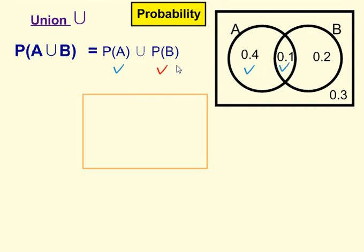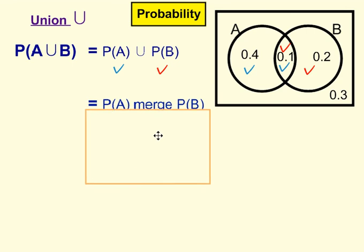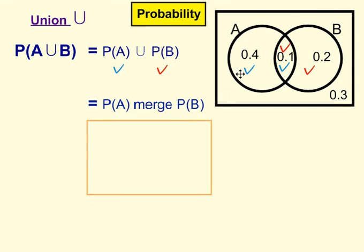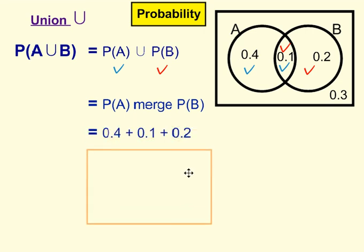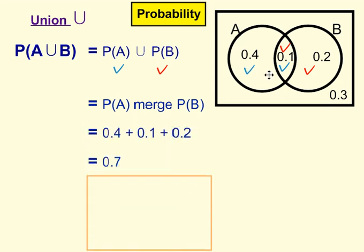Now we look at our second part, B. So B is contained within this circle here, so there's two regions within there — this region here and also the intersection here. The rule for union is we're going to add up all the areas that contain a tick, regardless of whether it's one tick or two ticks. So we're merging everywhere that has a tick and adding them all up: 0.4 plus 0.1 plus 0.2 to give us 0.7.